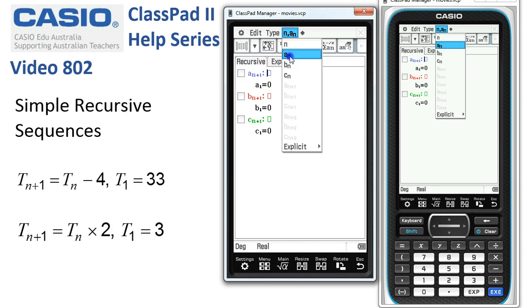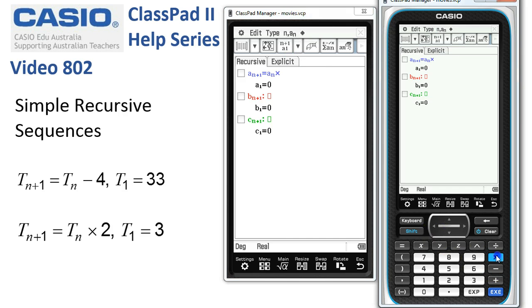The rule is we want the previous term multiplied by two. Tap execute. Enter the first term is three and tap execute.